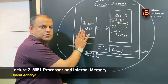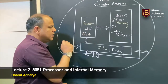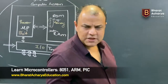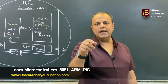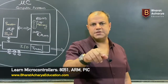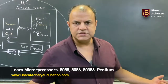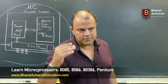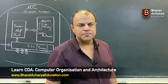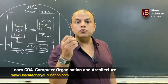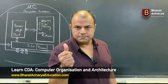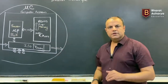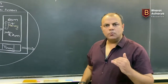Our first focus is on the processor. The 8051 has an 8-bit processor. What does that mean? It means it can do 8-bit operations in one cycle. Simply put, when you say 'ADD' — there is an instruction called ADD — you are adding two 8-bit numbers at a time in one operation.